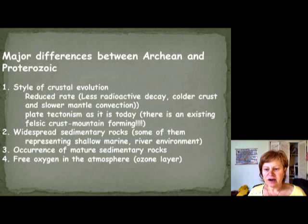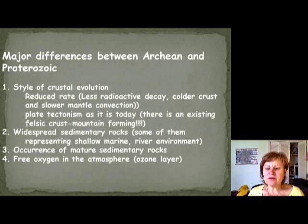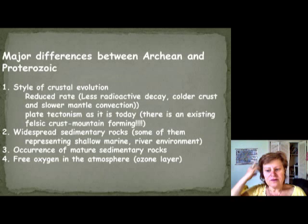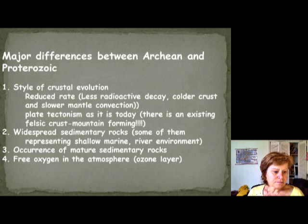This slide is going to be really important — I will ask this. The major difference between the Archean and Proterozoic: the first major difference is the style of plate tectonics, basically the style of crustal evolution. We know for a fact that by this time plate tectonics was normal, at the speed we know today. The reason is most likely because radioactive decay was lesser, so the crust became colder and mantle convection slowed down.